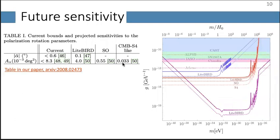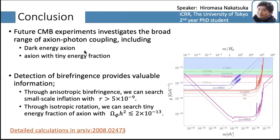Regarding future sensitivity, the table in our paper shows that future experiments will significantly improve the sensitivity of cosmic birefringence. In summary, CMB experiments can investigate cosmic birefringence over a broad range of axion-photon coupling, including dark energy axions and axions with a tiny energy fraction. Once we detect cosmic birefringence, it provides valuable information — for example, a lower bound on the tensor-to-scalar ratio or stringent constraints on the energy fraction. Please read our paper for more details. Thank you for listening.